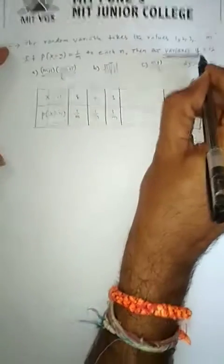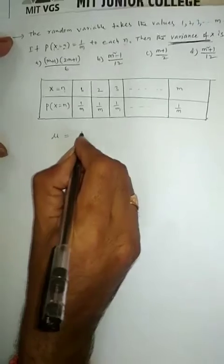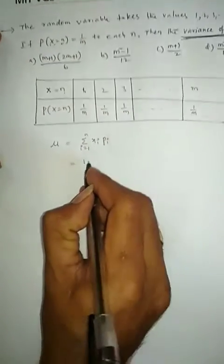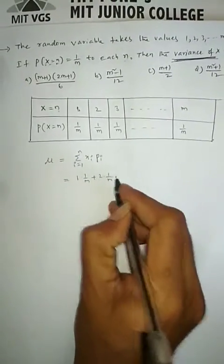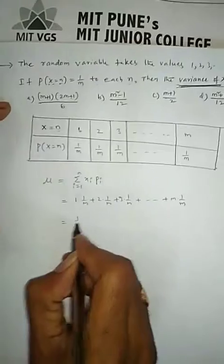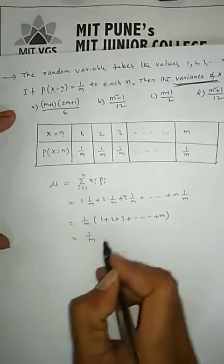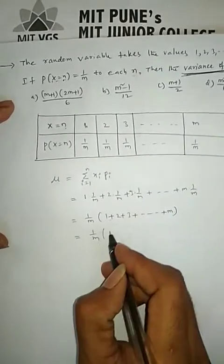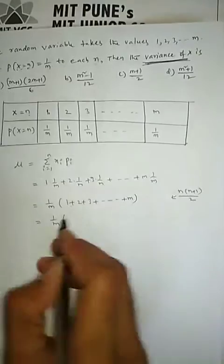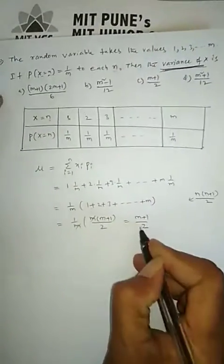Before finding the variance of X, we first need the mean. To find the mean value: mean = Σ X_i · P_i = 1·(1/M) + 2·(1/M) + 3·(1/M) + ... + M·(1/M). Taking 1/M common, remaining: 1 + 2 + 3 + ... + M = 1/M × (sum of M natural numbers) = 1/M × M(M+1)/2. M cancels, giving mean = (M+1)/2.